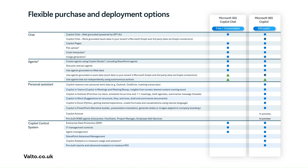This is broken down into multiple areas: chat, agents, personal assistant, and Copilot control system. Fundamentally, we can see straight off the bat that we've got a chat feature which is part of both the free and paid-for plan.